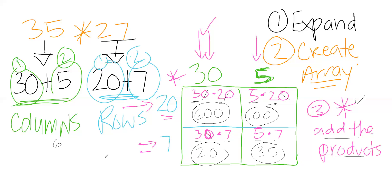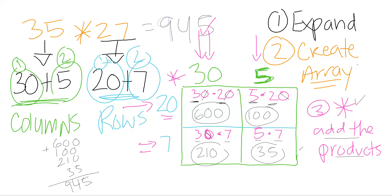We add 600 plus 100 plus 210 plus 35, lining up place values. Starting in the ones: 5, then 4, 6, 7, 8, 9 — so when we multiply 35 times 27 we get 945 as our final product. Because we've already practiced this method, we can see that as the numbers change and we have more digits, the model changes but the steps don't.